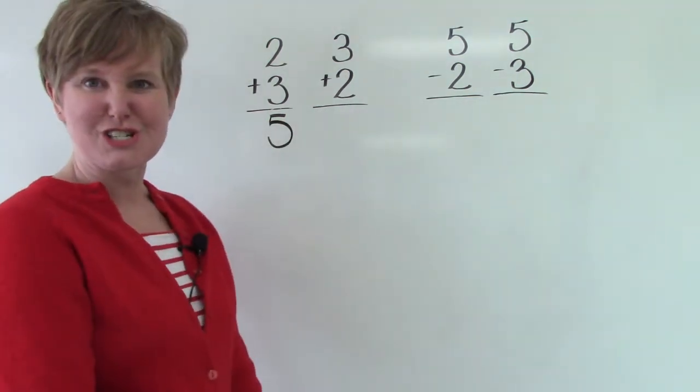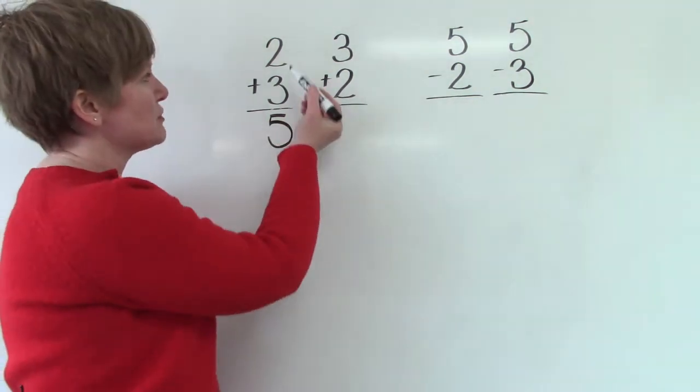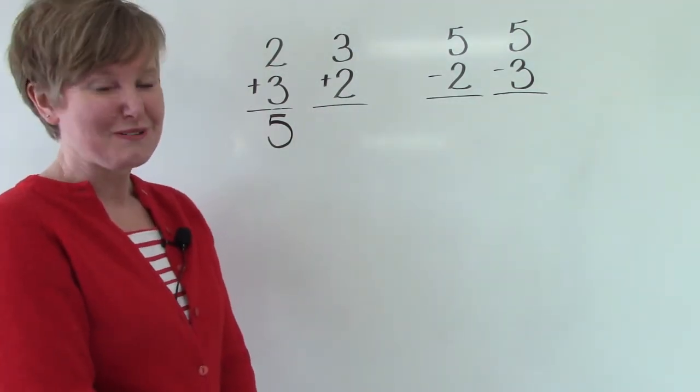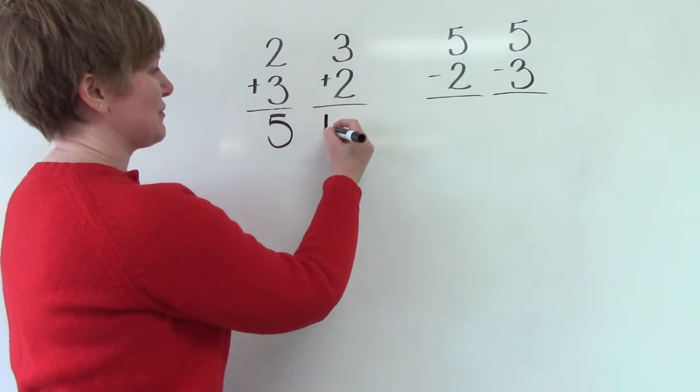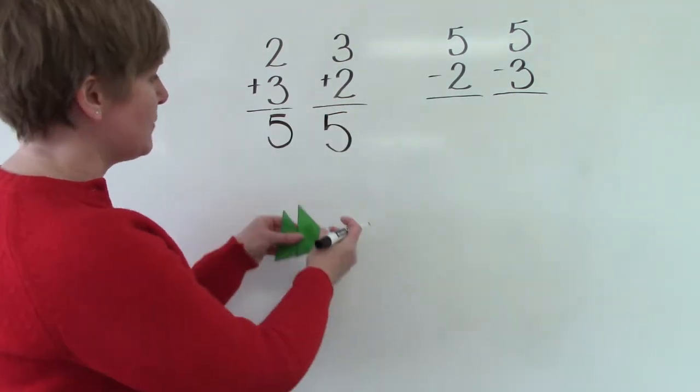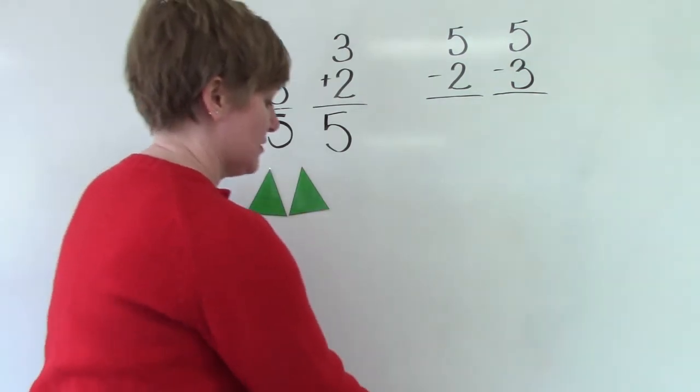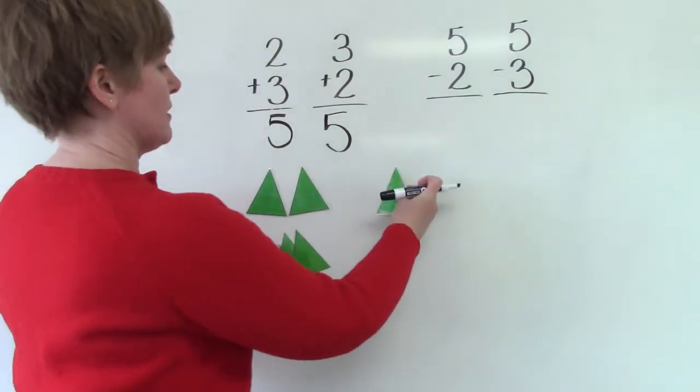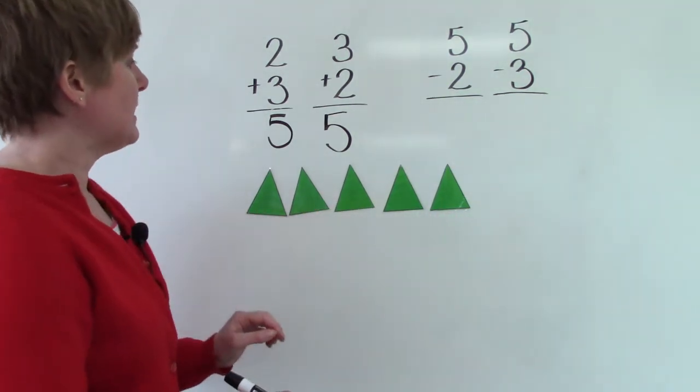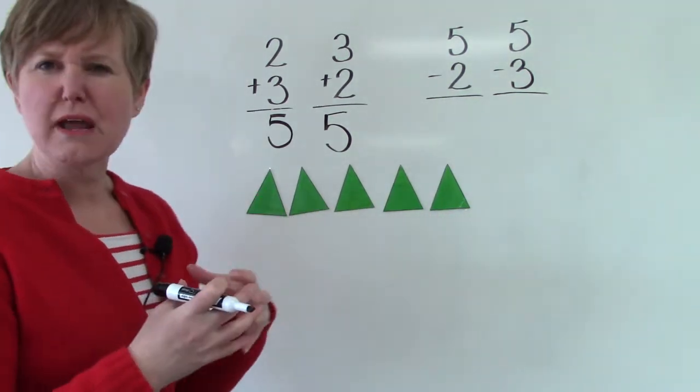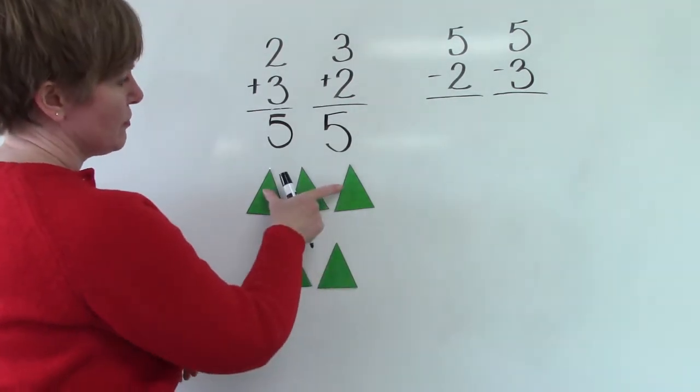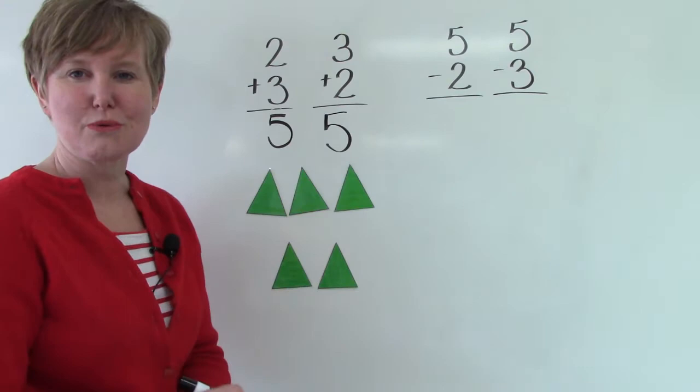Well this is really just the same question. Here we have 2 plus 3 and this is 3 plus 2. It would also be 5. That is correct. So we know that if we have 5, like 5 triangles, and if we kind of break that number apart and say that it is really 3 plus 2 or 2 plus 3.